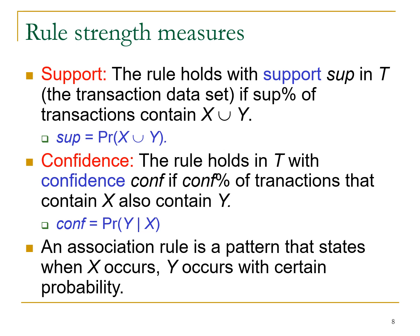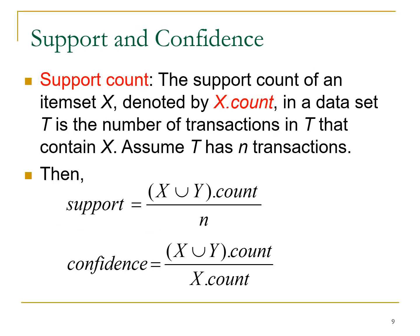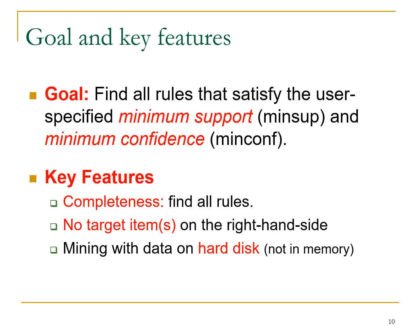Whenever we have a dataset, we need to identify the values of support and confidence to make a meaningful association rule decision. An association rule is a pattern that states: when X occurs, Y occurs with a certain probability. The support count of an item set X, denoted X.count, in dataset T with n transactions is the number of transactions containing X. Support = (X ∪ Y).count / n, and Confidence = (X ∪ Y).count / X.count. These formulas must be remembered for calculations.